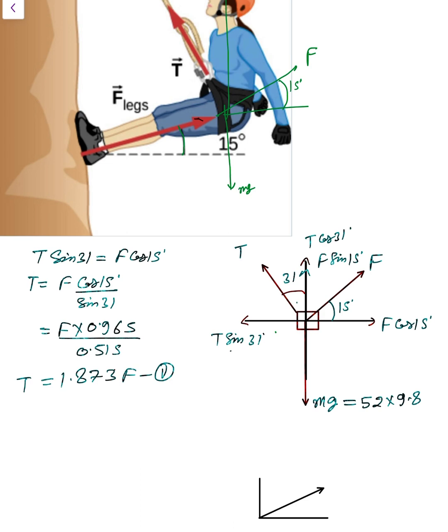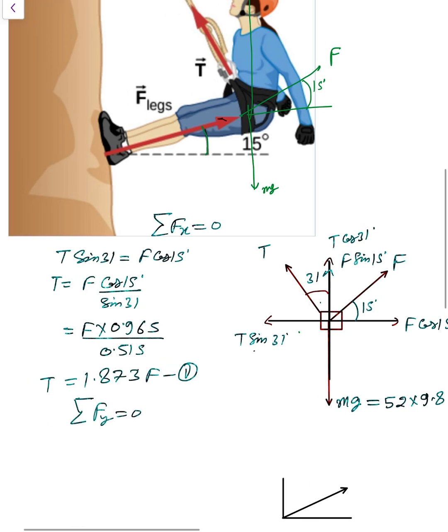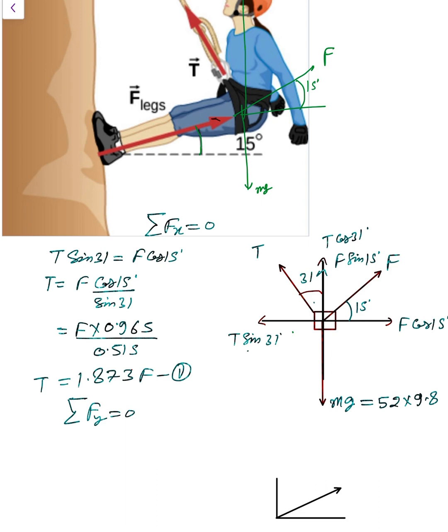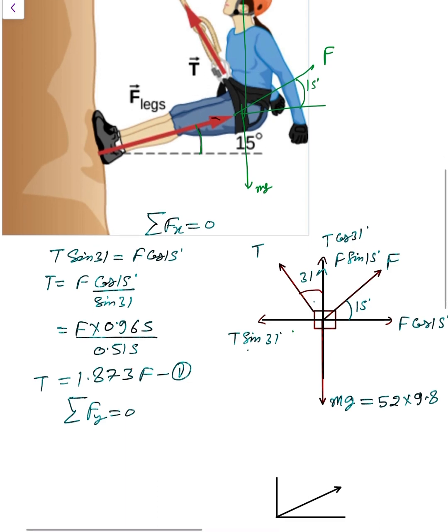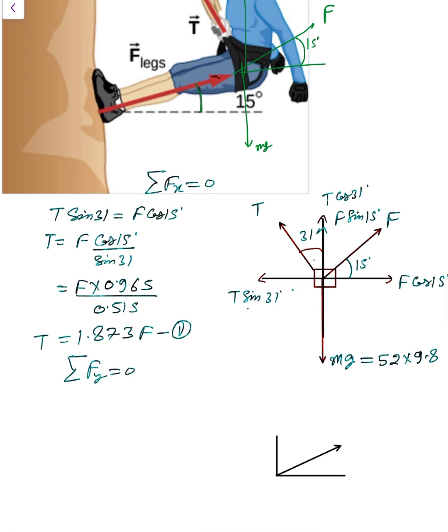Now the whole system: here also written as ΣFx = 0, and here ΣFy = 0, because the net force is zero on the climber, the mountain climber. So also Fy is also zero in the vertical direction.